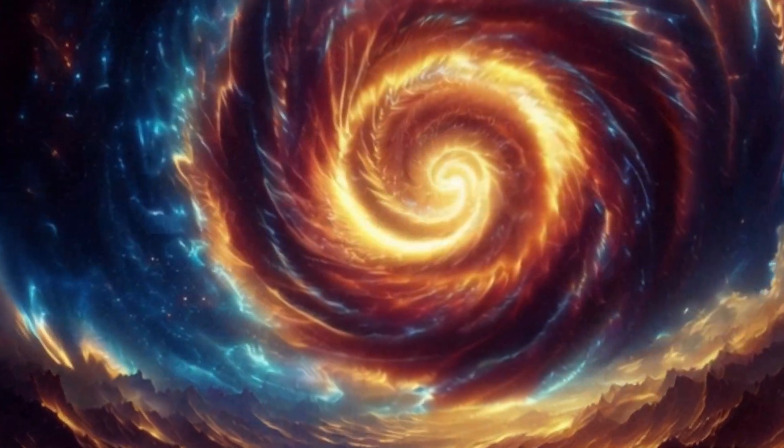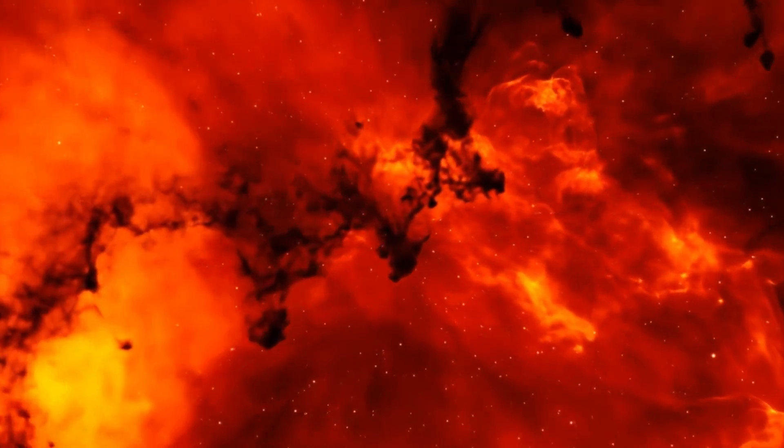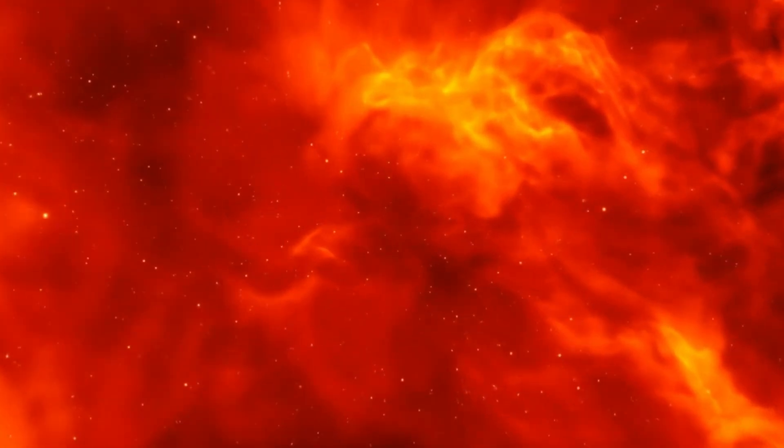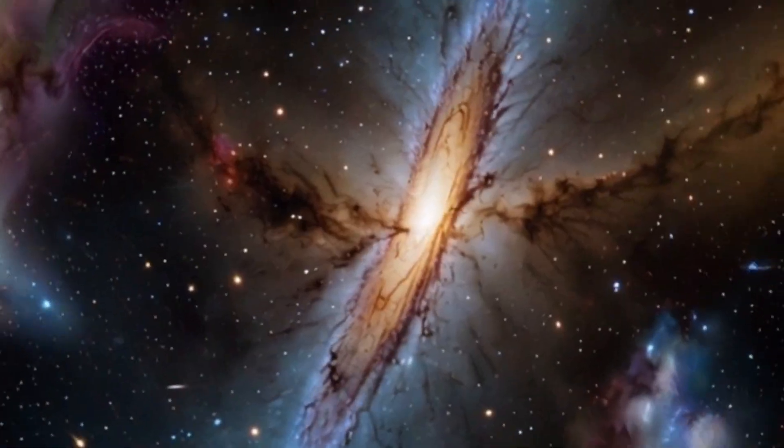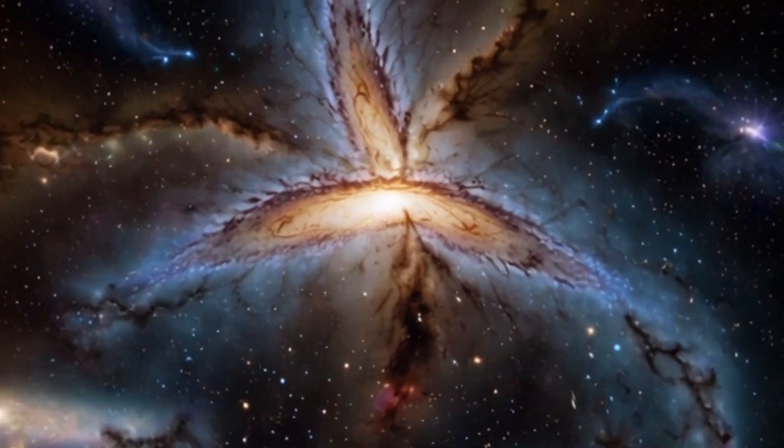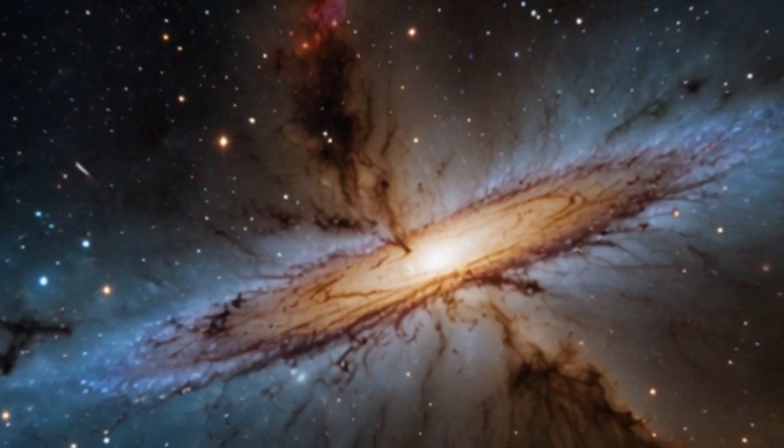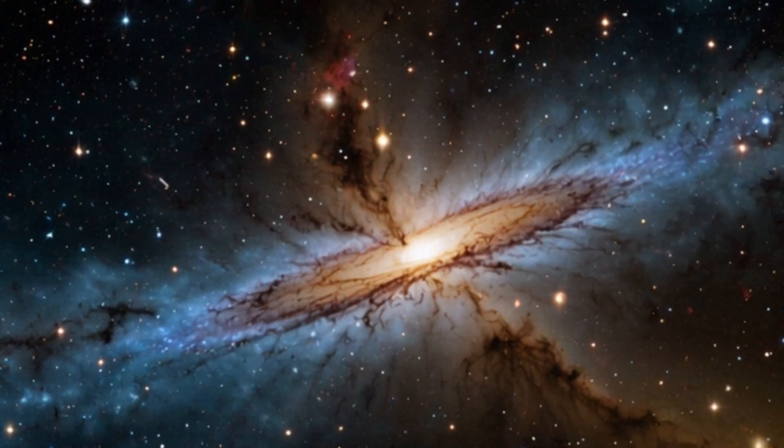Most massive black holes in the centers of clusters release enough energy through jets to suppress cooling gas, preventing new stars from forming. This process is known as AGN feedback. It's what keeps massive galaxies from turning into uncontrollable star factories. But Phoenix A is different. Either it's sleeping, or it's breaking the rules.